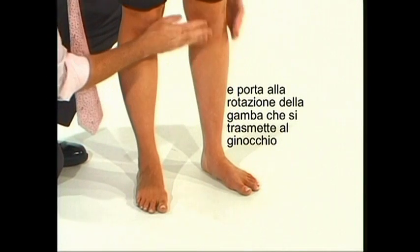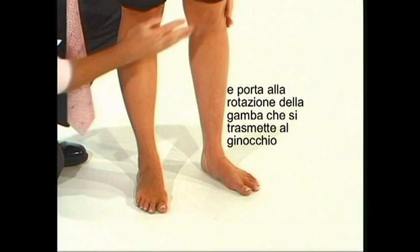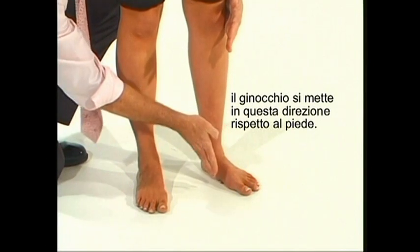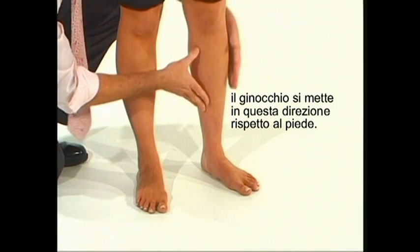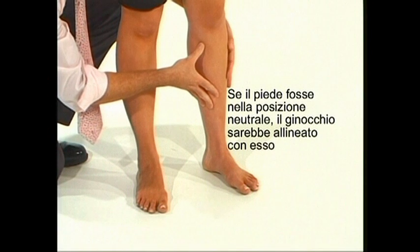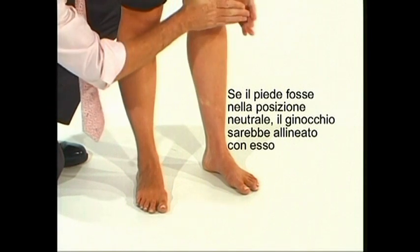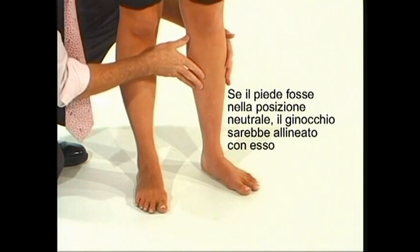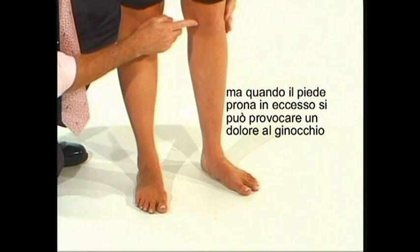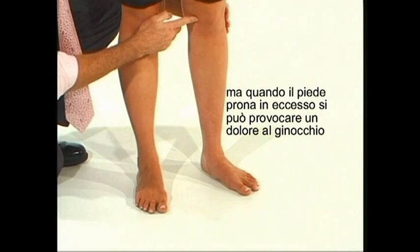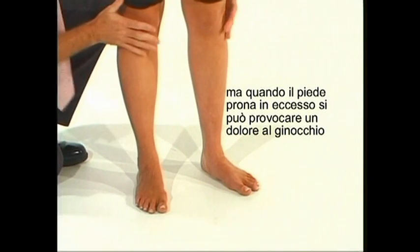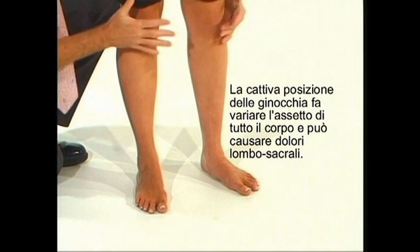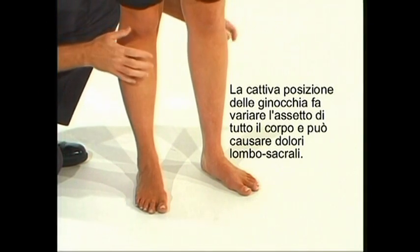This also rotates right up the leg into the knee. The knee in this case is pointing in one direction while the foot is going in another. If the foot was in a neutral position, the knee would follow the foot. Unfortunately, when the foot pronates excessively, we get this rotation in the knee which causes knee pain. And conversely, right up the whole body, we get this rotation which is the common cause of lower back pain.